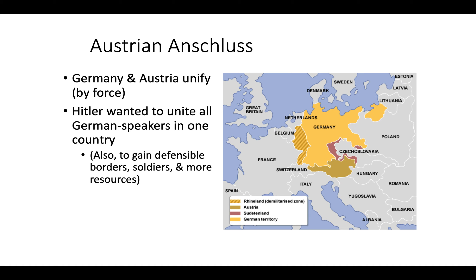Hitler demanded Austria give important posts to Nazis. Before Hitler took over, he went in and told the Austrian Chancellor that he needed to give important posts to Nazis. The Prime Minister thought, let's put this to a public vote. Hitler did not like this idea, so he sent in troops immediately into Austria and announced the unification of Austria and Germany, henceforth taking over Austria. He tried to do it through the government, kind of like how he did in Germany, but the Austrian Chancellor was going to let the public decide — and Hitler said no, this is what's happening.